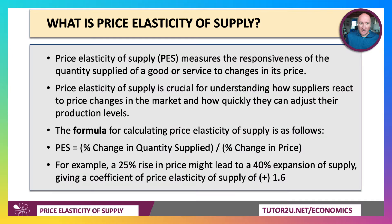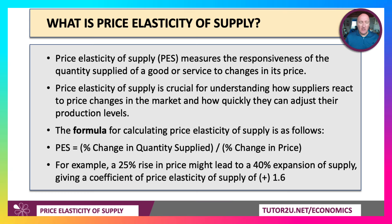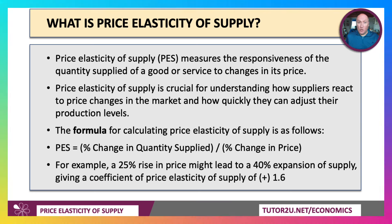PES — price elasticity of supply — measures the responsiveness of the supplier of a good or service to a change in its price. It's a really important idea: can suppliers adjust quantity produced in response to changing price signals in the market? The formula is percentage change in quantity supplied divided by percentage change in price.